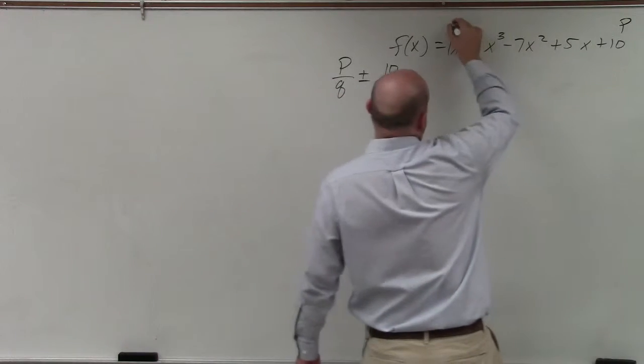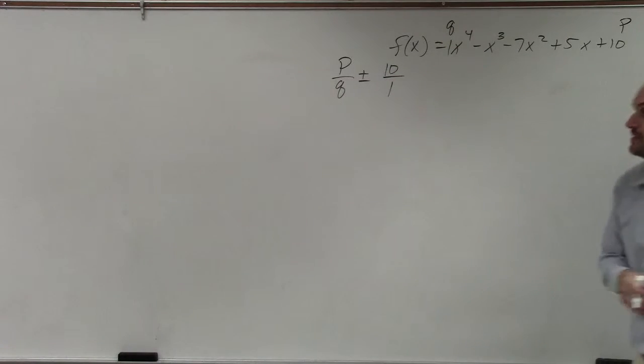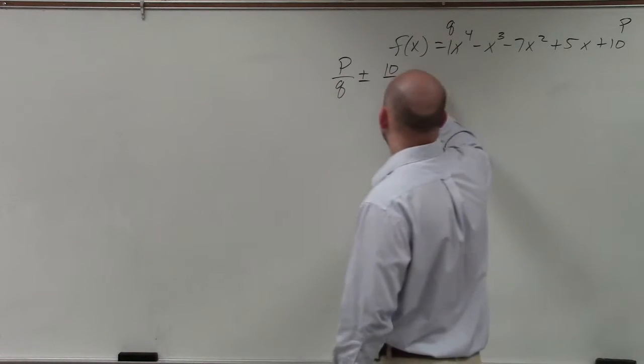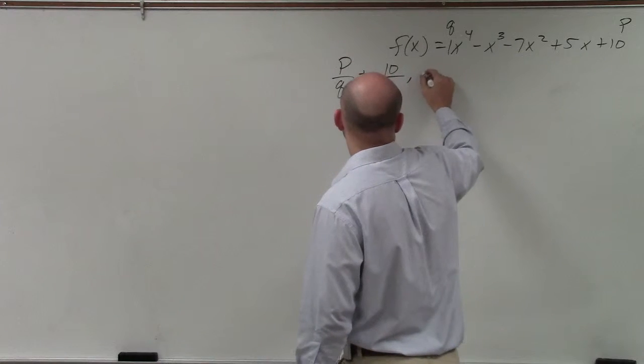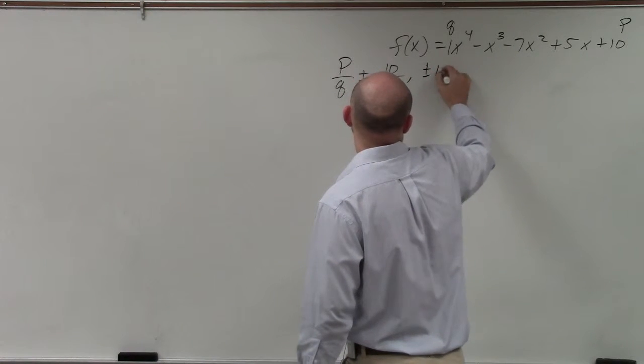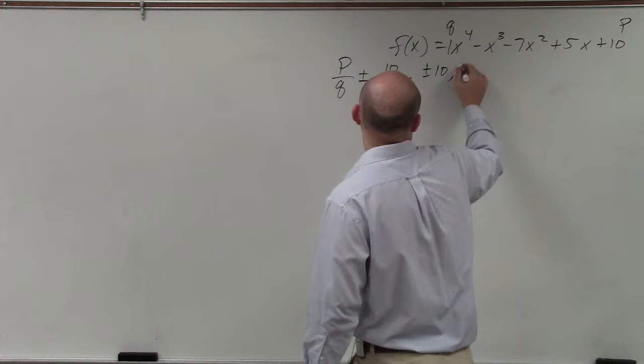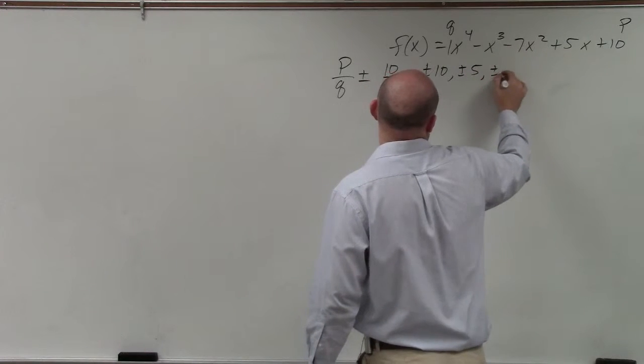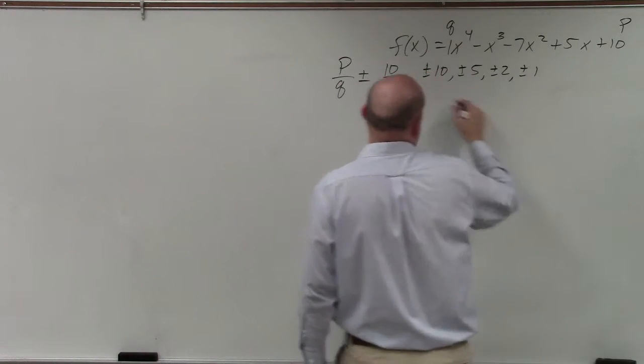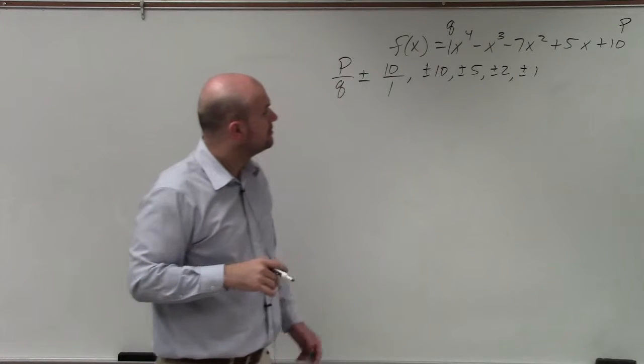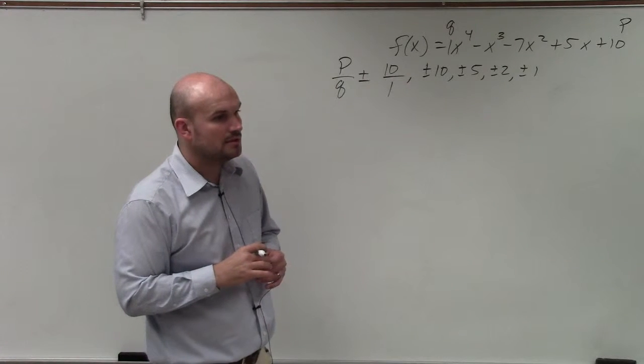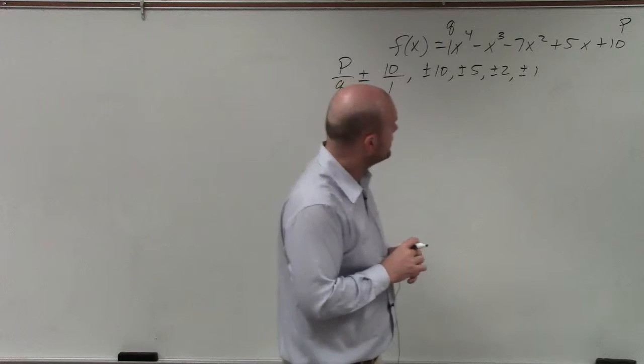That's my p. That's my q. So the factors of 10 plus or minus are going to be plus or minus 10, comma, plus or minus 5, comma, plus or minus 2, comma, plus or minus 1. Yes? That's supposed to be 4x. Hold it. 4x. I said, no, never mind, never mind. OK.